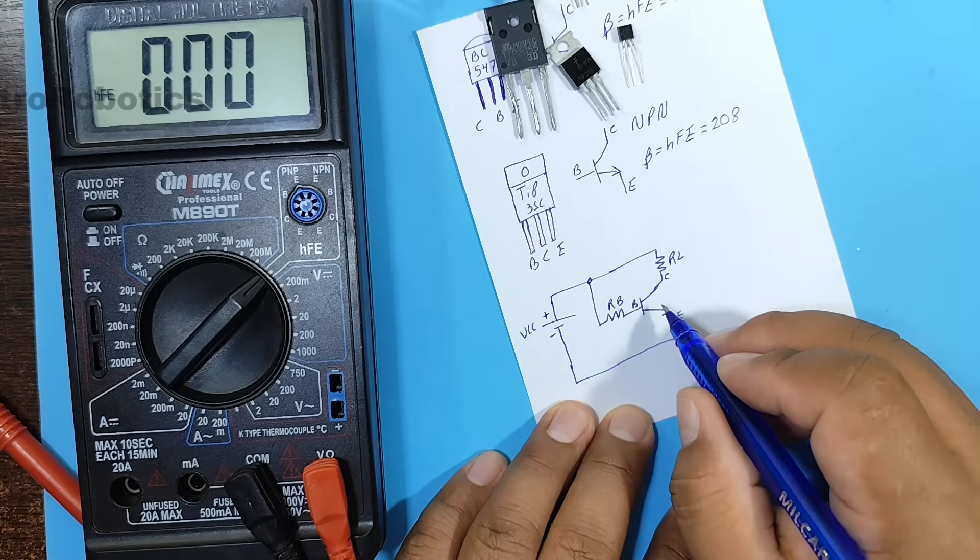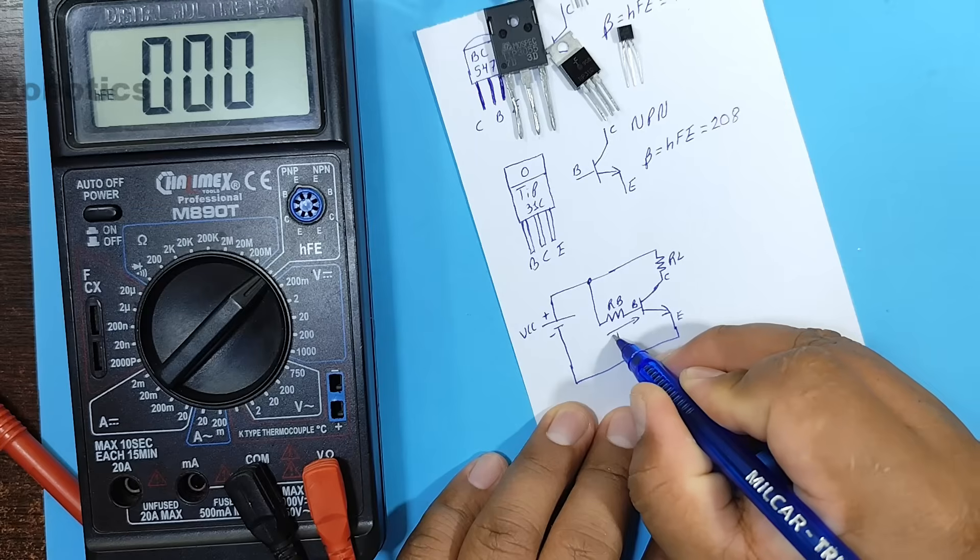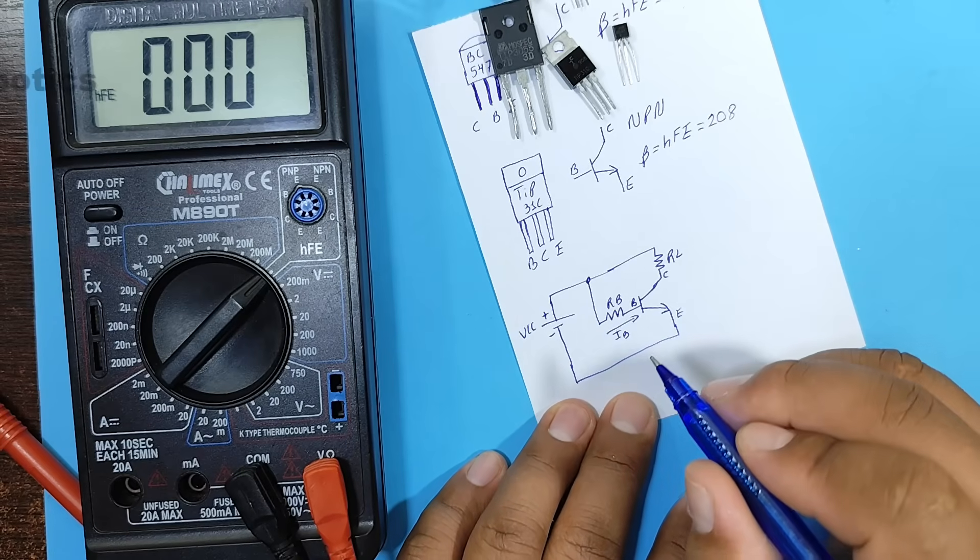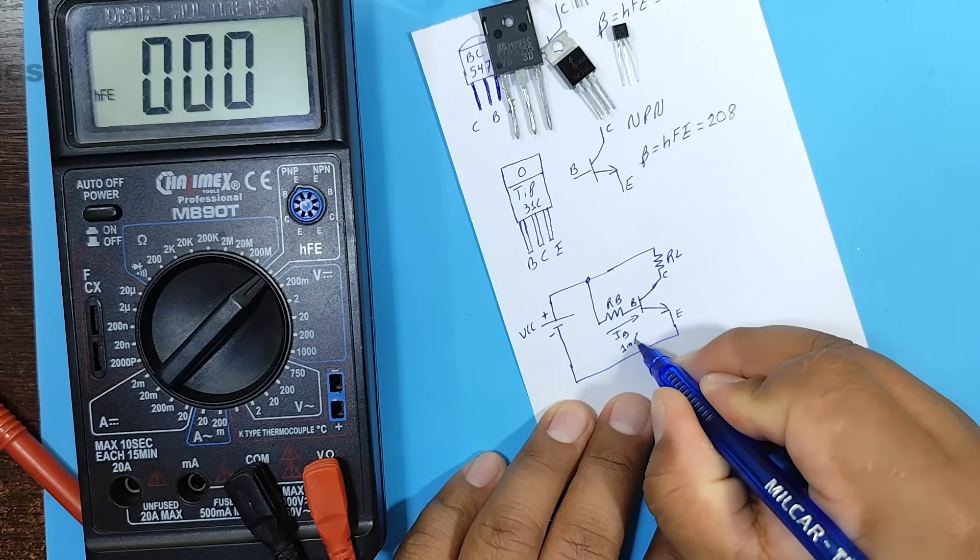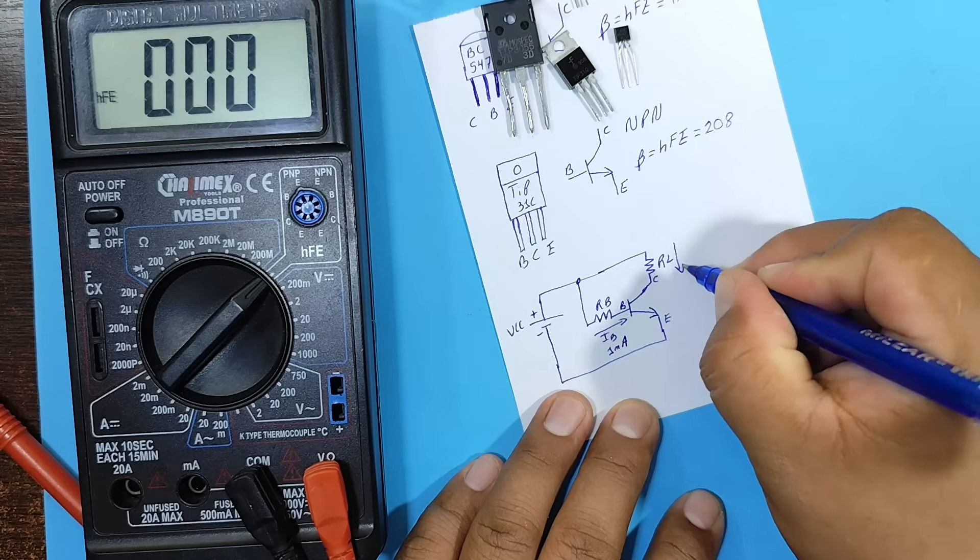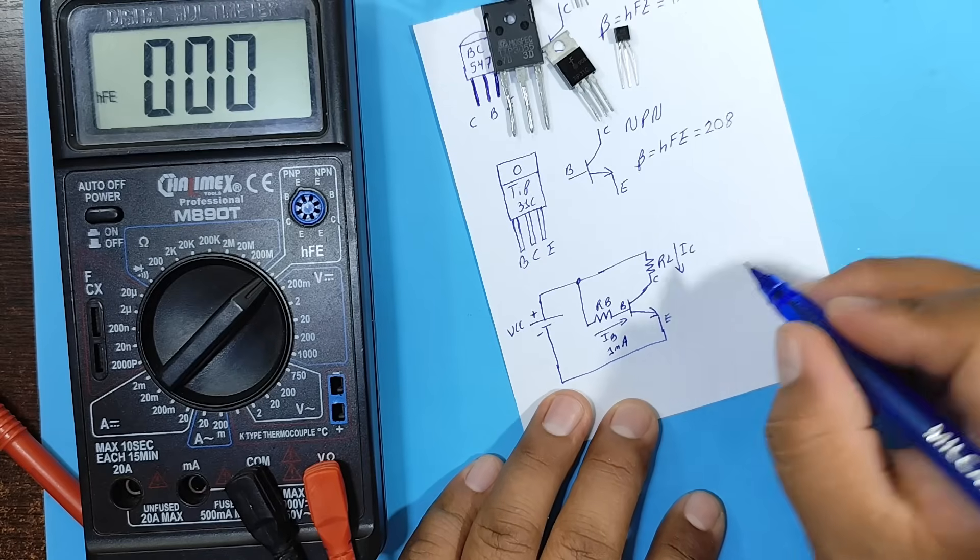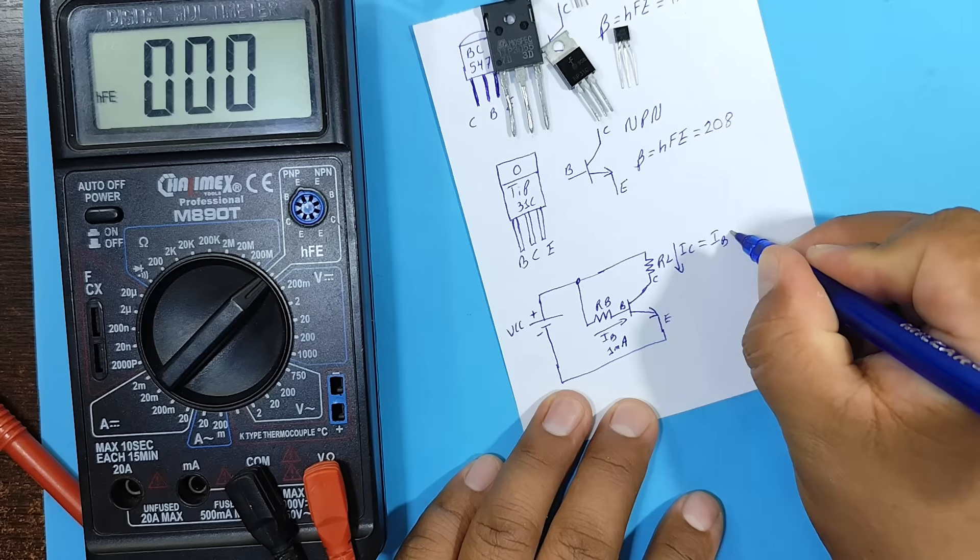The BJT transistor operates based on the current entering through its base. That is, there is a base current. If this base current is 1 mA, what would be the current flowing through the collector? Well, this current would be equal to the base current, multiplied by the gain, or beta.